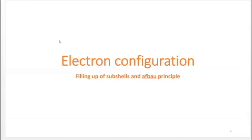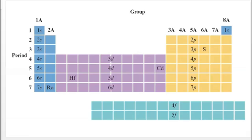In chapter 9, the major concept is electron configuration. Let's learn electron configuration in about 20 seconds. If you look at the periodic table, with the s block being the 1A and 2A columns, the d block being in the middle, the p block on the right as the non-metals and metalloids, and then the f block on the bottom, you can simply determine the electron configuration of any element by reading the periodic table like a book.